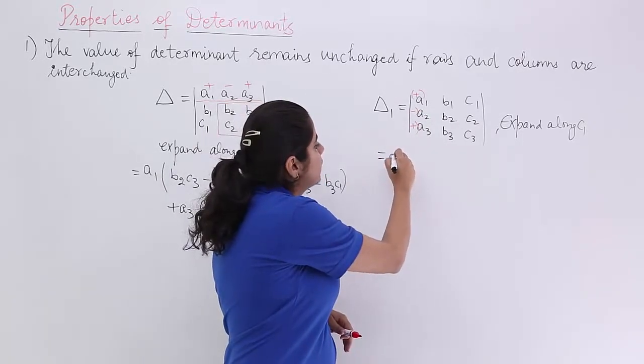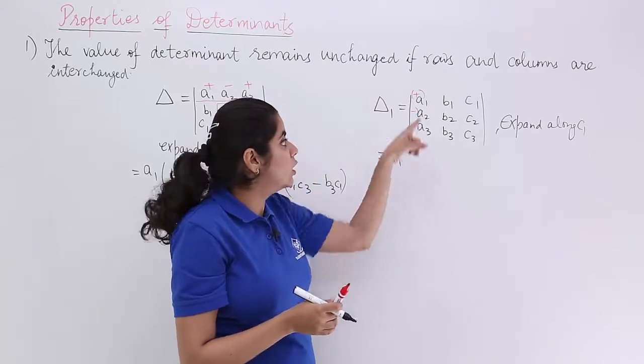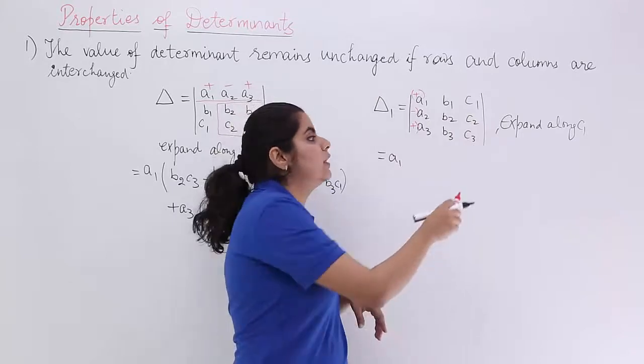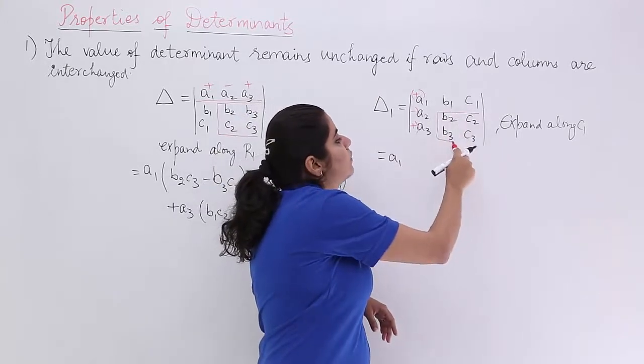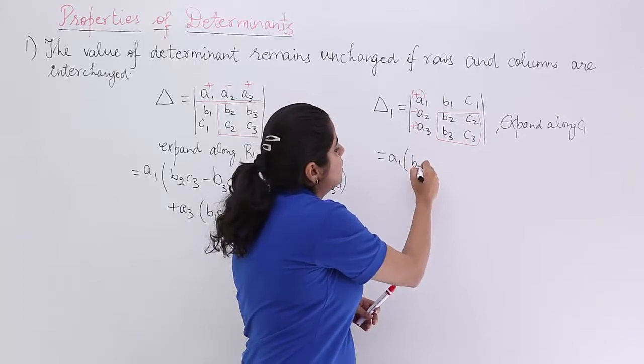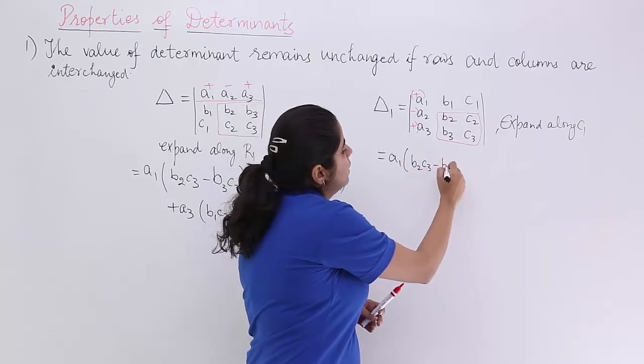a1 will be here. Expanding along the first column. Remove the first column. Remove the first row. You are left with the sub-determinant comprising of these 4 elements. Cross-multiply. It is b2c3 minus b3c2.